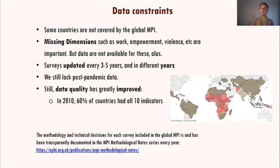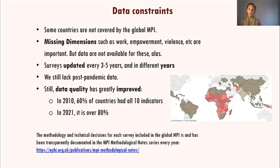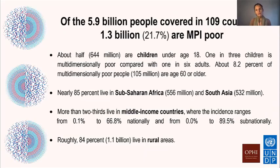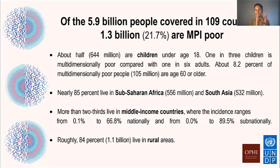Since 2010, a lot has improved — in 2010, only 60 countries had all 10 indicators, and in 2021 it's well over 80%. Using these data, we find that of the 5.9 billion people covered, 1.3 billion are poor. Of those 1.3 billion, half are children under the age of 18. Among adults, one in six is poor, but among children, it's one in three.